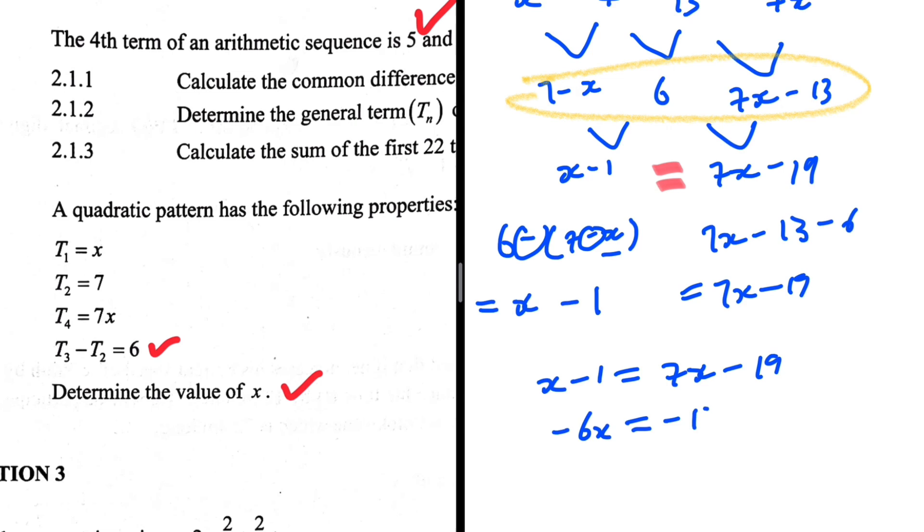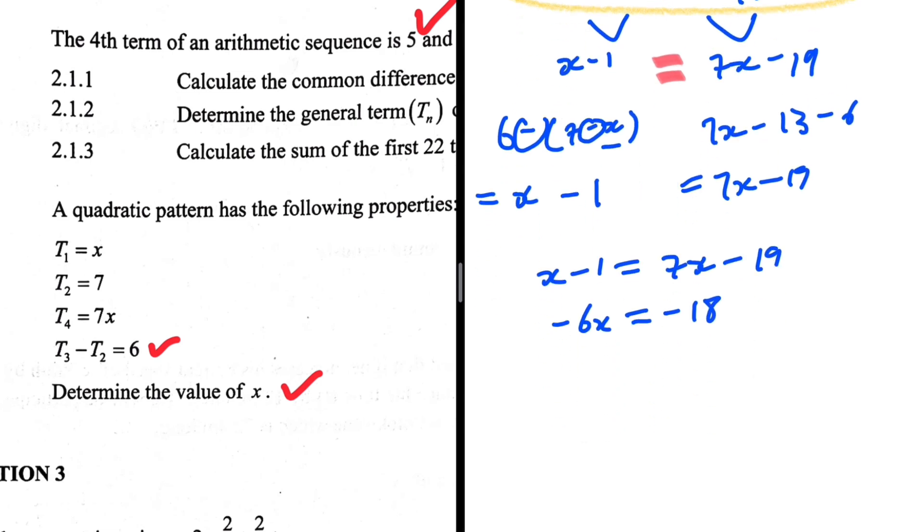And then we get minus 19 plus 1 which is minus 18. It should be easy to see that x equals 3. There we go.